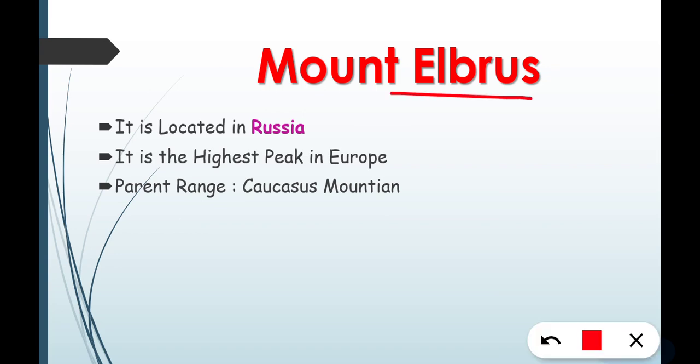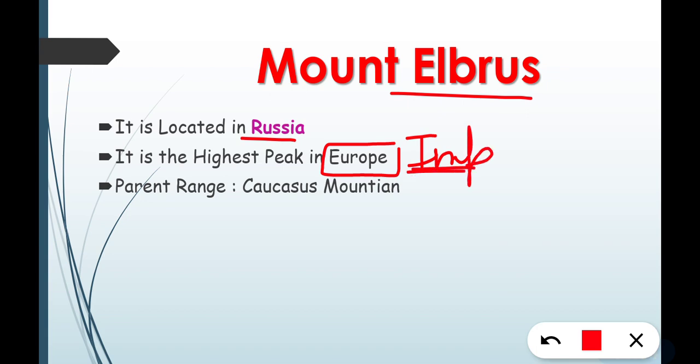Mount Elbrus is the highest peak in Europe. This fact is important for you. If you are asked about the highest peak in Europe, the answer is Mount Elbrus. Its parent range is in the Caucasus region.